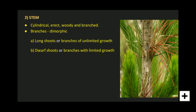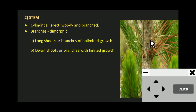Moving on to the long shoot or branches of unlimited growth — these are present on the main trunk. In the branches of unlimited growth you can see the presence of apical buds. Apical buds, also known as terminal buds, are growing points located at the apex of the stem. The continuous cell division in apical buds causes these branches to grow indefinitely.